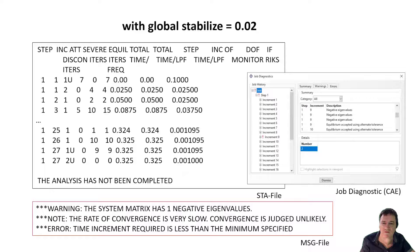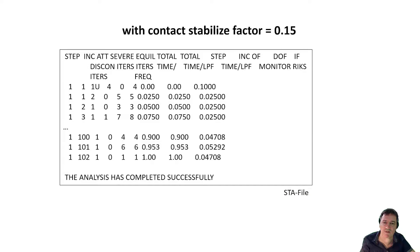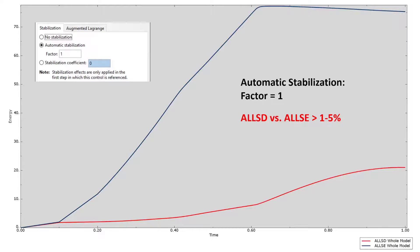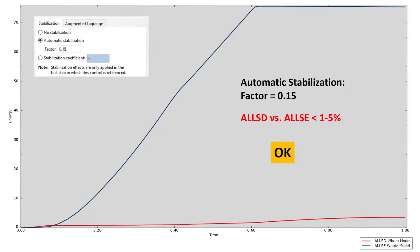In this case the message file shows a warning about negative eigenvalues and slow convergence. A third calculation runs with contact stabilization using a higher factor, and the calculation converges to the end and completes successfully. However, the control of the ratio of energy with that higher factor is not good — the ratio is higher than 5%, meaning the stabilization factor is too high. Using a smaller factor for contact stabilization brings the energy ratio back below 5%, which is acceptable.